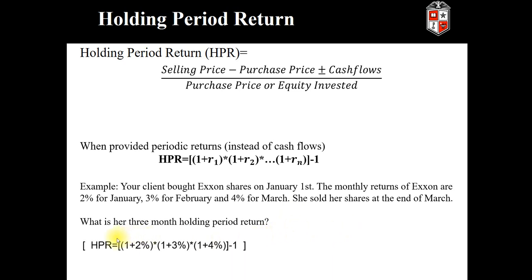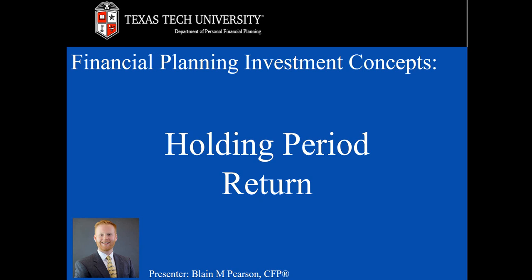The holding period return should be (1 + 0.02) times (1 + 0.03) times (1 + 0.04), minus 1 after the math is done. This will give us our holding period return. This is Blaine Pearson, and in this video we covered how to calculate the holding period return.